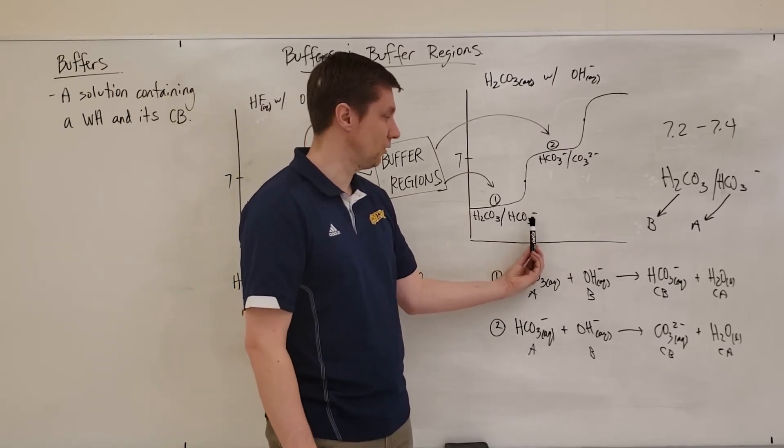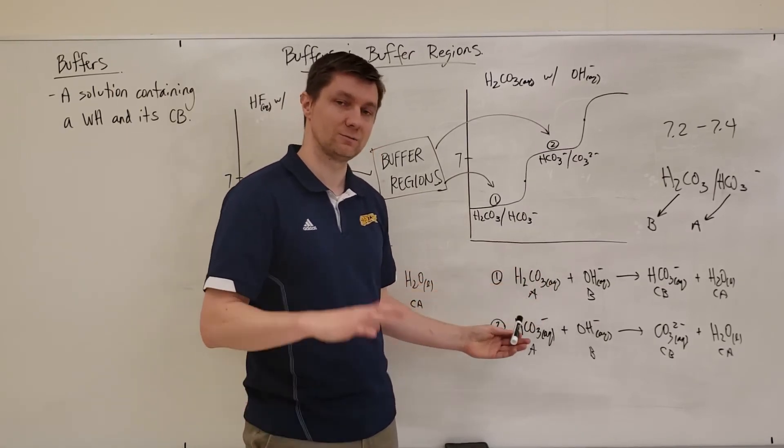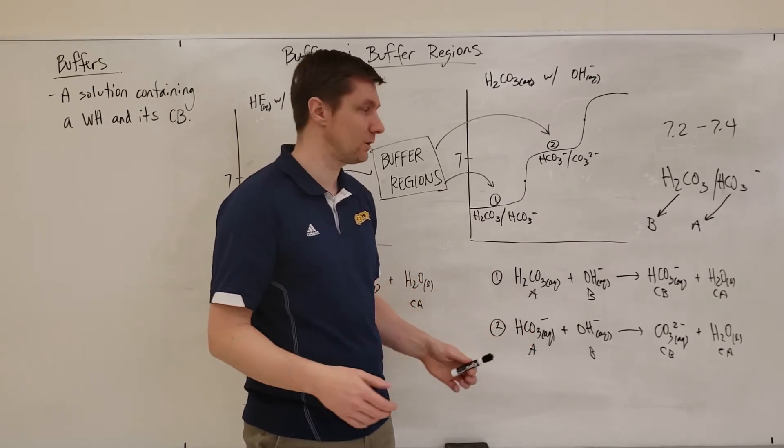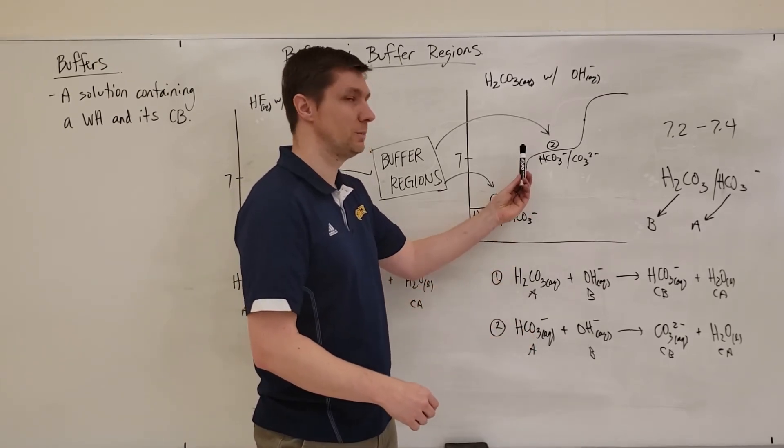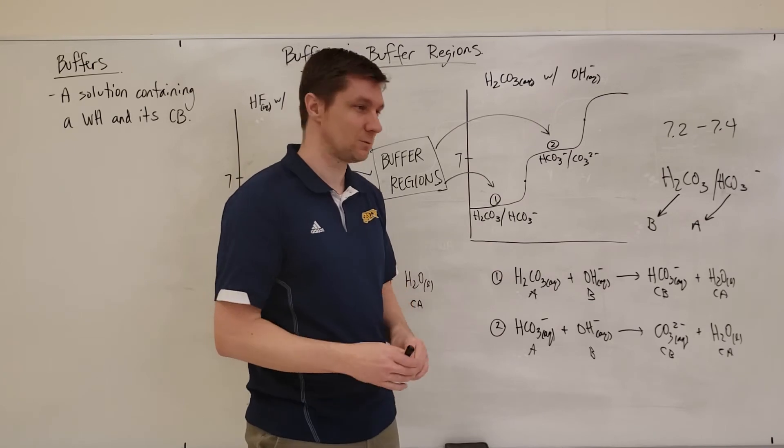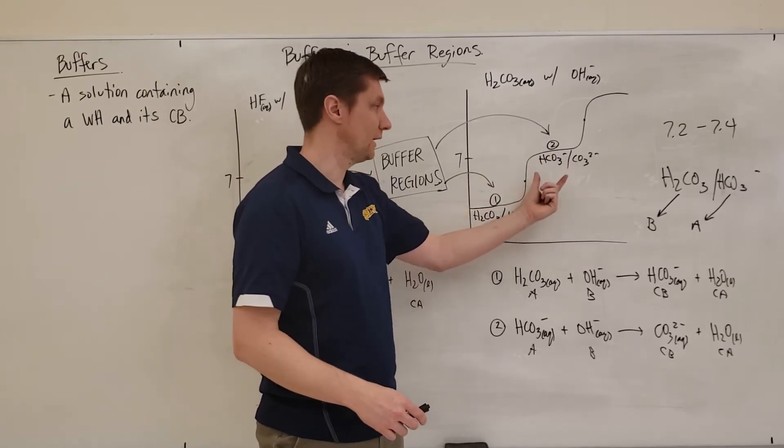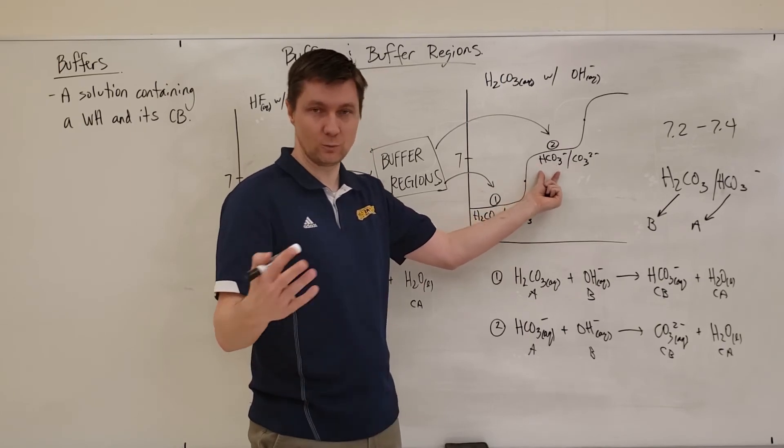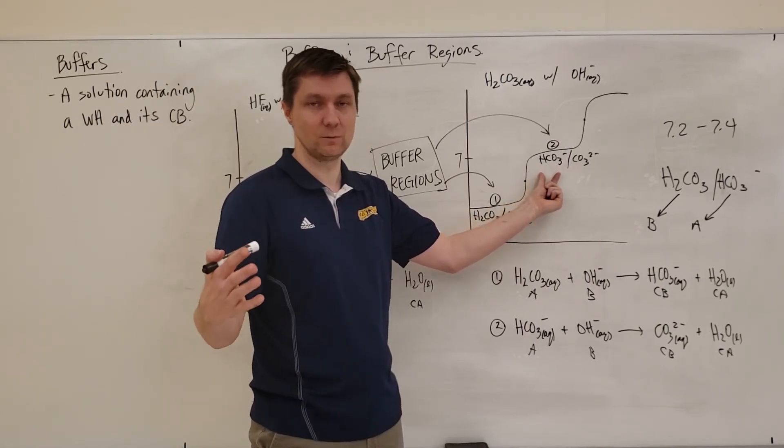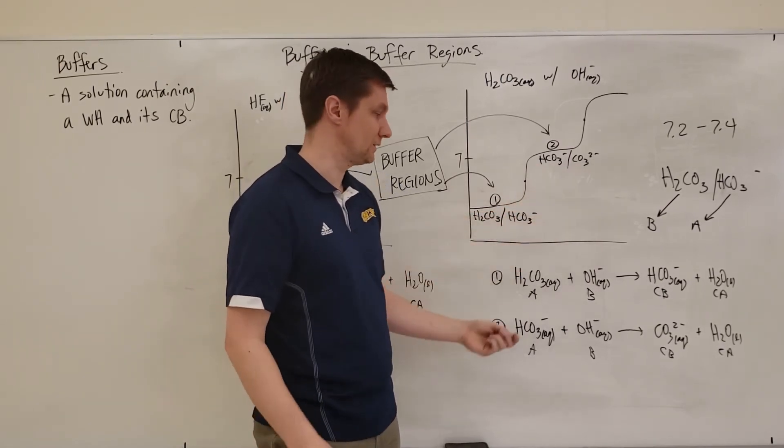When I add enough hydroxide though, all of the H2CO3 now has reacted. The buffer has run out. And so I get a sharp rise in pH. But the interesting thing with this one now is now I develop actually a second buffer region here, where I get HCO3⁻, which is still a weak acid. It's not a very good one, but it's still a weak acid with its conjugate base.